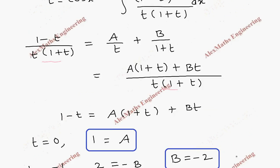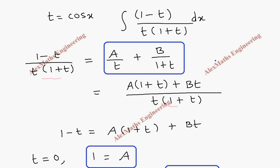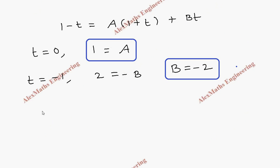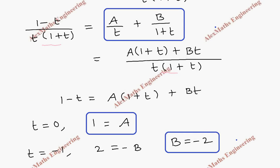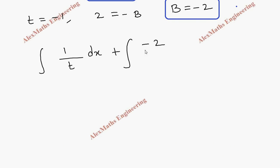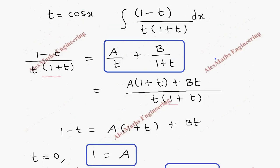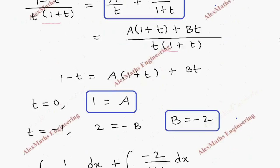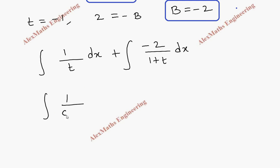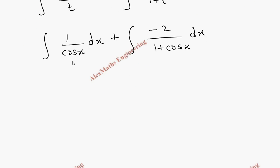This we are going to substitute in the step where we apply the partial fraction rule. So A by t: integral 1 by t dx. Plus integral B by 1 plus t, so this is minus 2 by 1 plus t, and we have dx. Since the integration is with respect to dx, we have to replace the t in terms of x. So this is 1 by cos x dx minus 2 by 1 plus cos x dx.